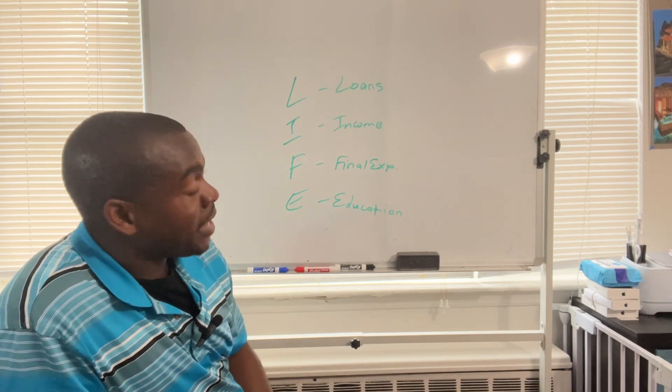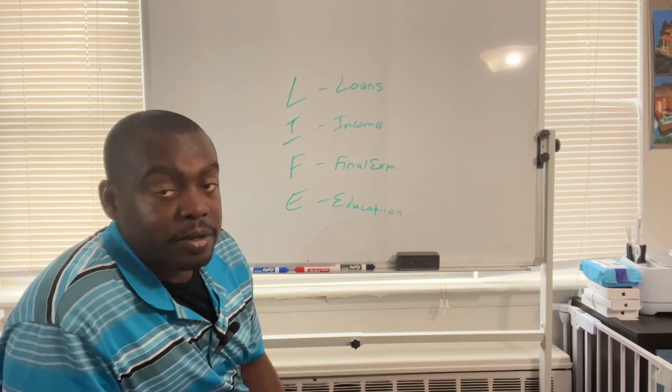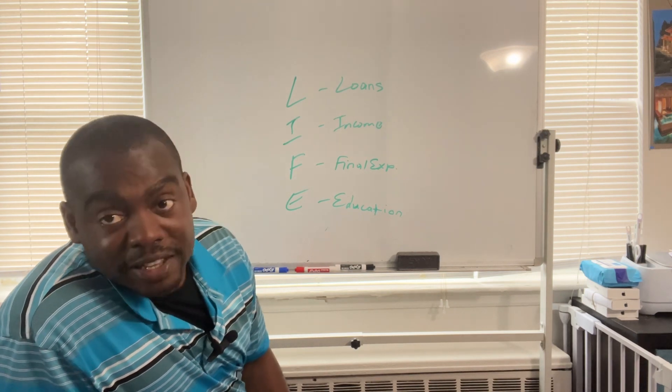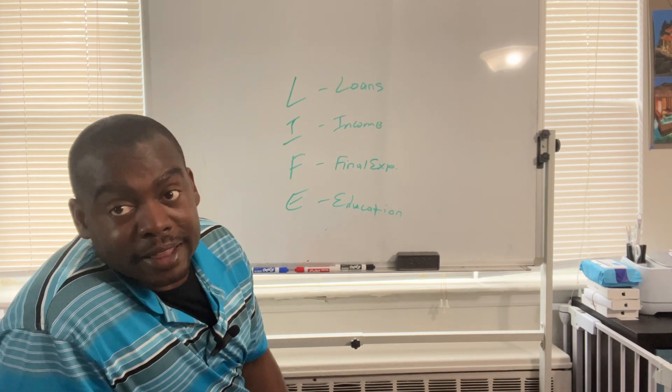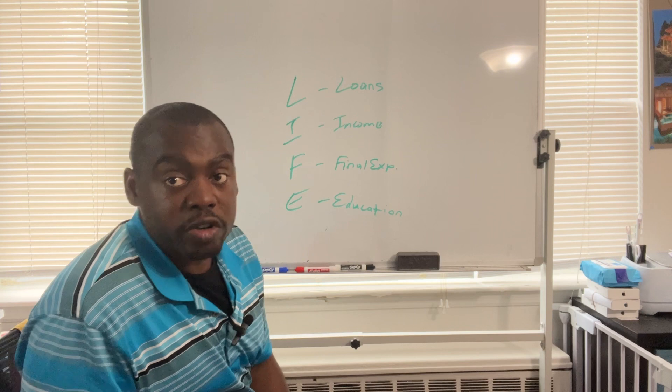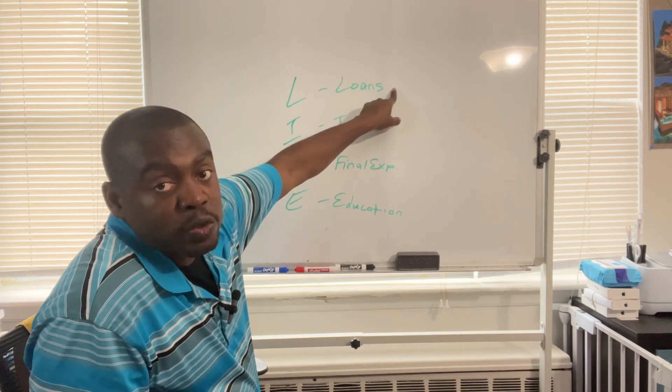This is why they have it set up where if you die, your debts get transferred to your family member. So we don't want to leave that burden on our family member and them taking on our responsibility. You want to add up your loans, anything you owe.